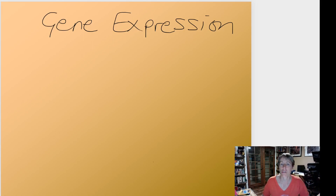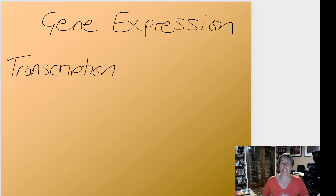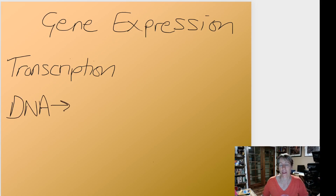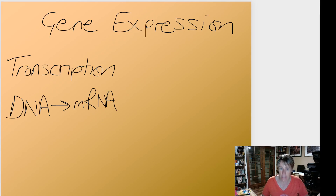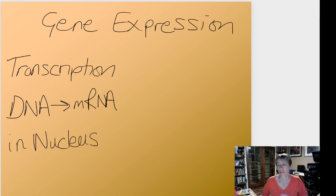The first part is called transcription, and that's what we're going to be going over in this video. In transcription, your cell is taking the DNA and making a copy of it as messenger RNA — so you start with DNA and make a copy in the form of a molecule called messenger RNA. Because you're starting with DNA, this whole process has to happen in the nucleus, because that's where the DNA is located.